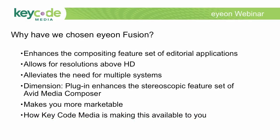So why has KeyCode Media chosen Ion Fusion? Well, for a couple of different reasons. First off, there are glaring gaps in editorial applications. One of them most notably is compositing — compositing is traditionally not found in editorial applications, especially within Media Composer. It's very limited. So Fusion allows you to have this capability where it previously didn't exist. It also allows resolutions above HD. While Media Composer is a fantastic editorial application, working with resolutions above HD — 2K, 2.5K, 3K — is rather difficult and just isn't available within Media Composer now.